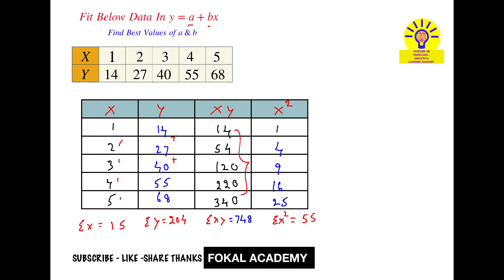In the next step, write the normal equations. Apply summation to the equation y equals a plus bx on both sides. You get sigma y equals — summation of a means a is added up 5 times — so 5a, plus b into summation of x. Next, multiply x on both sides of the equation, giving xy equals ax plus bx-square.